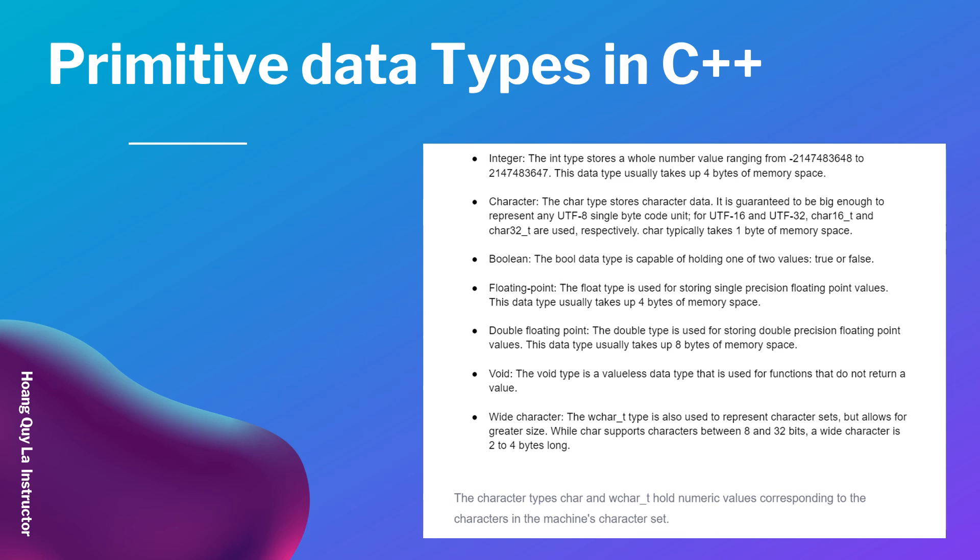Double is larger — the double type is used for storing double-precision floating-point values, and this data type takes double the memory, which is eight bytes of memory space.